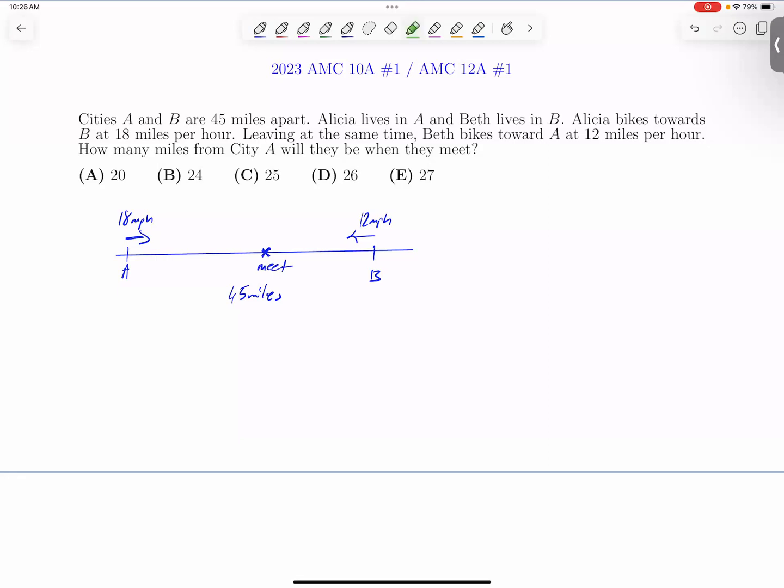The distance from A to midpoint is what we are looking for. And first of all, they bike the same time, leaving at the same time. Meaning that the distance covered by Alicia to distance covered by Beth are proportional to their rates.